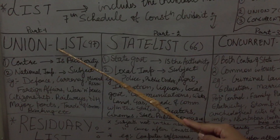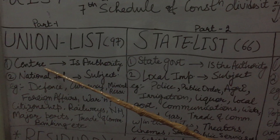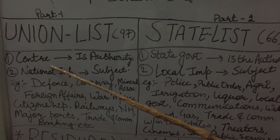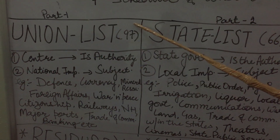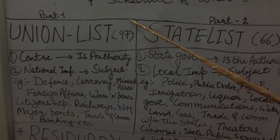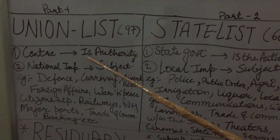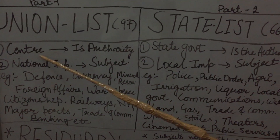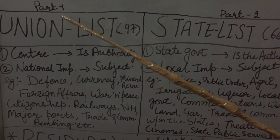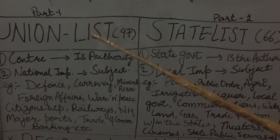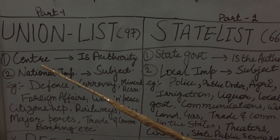Part 1 is about the union list. Jab main union bolti hun, union ka matlab hota hai center — matlab jo hamare central government hai, uski yahan authority rahegi union list mein. Kitne subjects hain? Originally 97 subjects the union list ke andar, but now we have 100 subjects. Toh kiski authority hoti hai union list mein? Center.